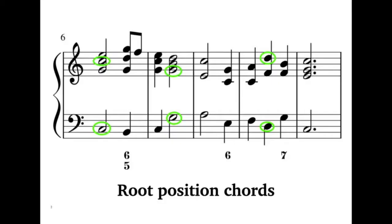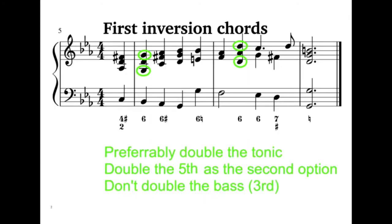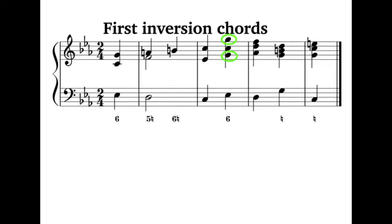When writing for four parts, doubling has to take place when you're realizing any triad. Always follow the provided guidelines. For five-three chord, double the bass note. The bass is the tonic of the chord. Or if not possible to double the tonic, double the five of the figuring which is the fifth of the chord. For six-three chords, double the six from the figure which is the tonic of the chord. You can also double the three from the figure, the fifth of the chord.